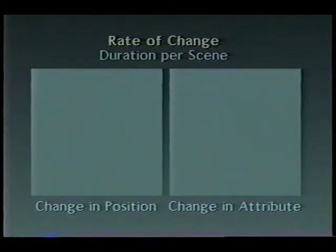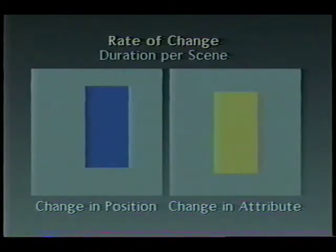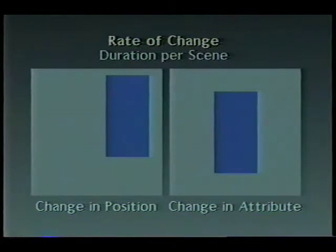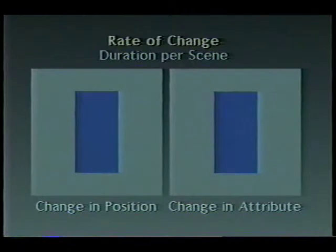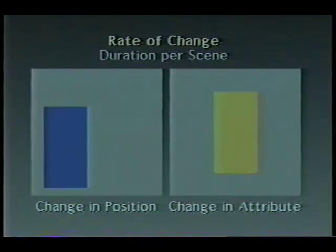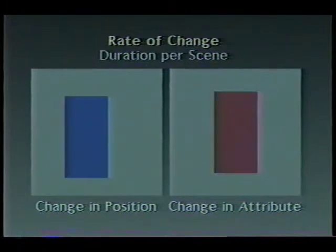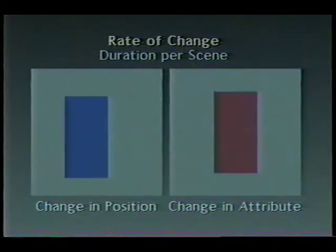First, we observe the effects of changing scene durations for a sequence of scenes. If we define a relatively long duration for each scene, changes between scenes appear abrupt and viewers have a relatively long time to examine individual scenes. By shortening duration, the change in position appears smoother and more rapid, while the flashing change in attribute appears more urgent.